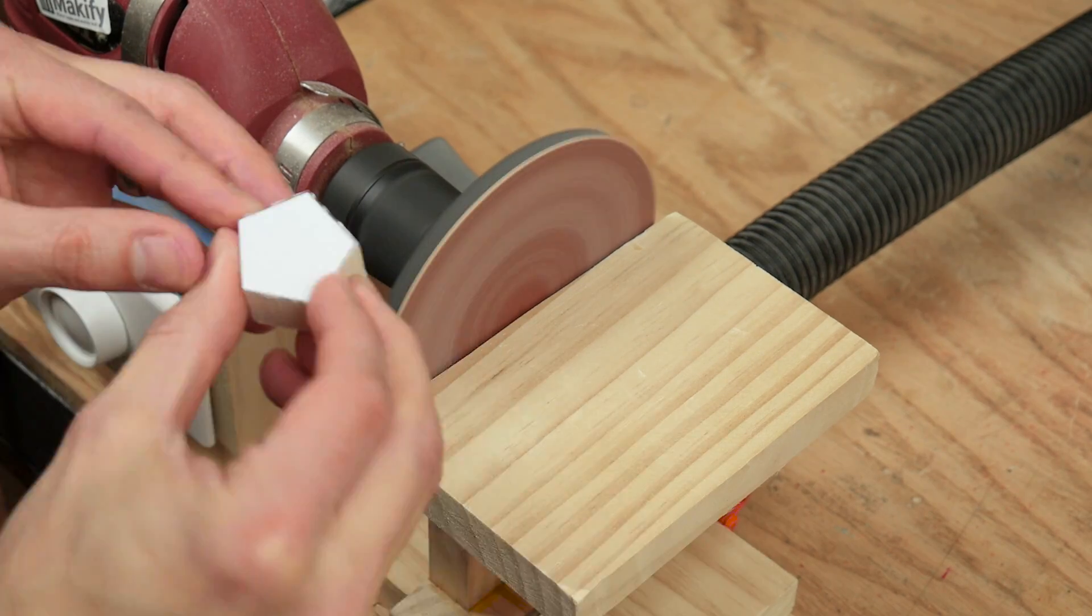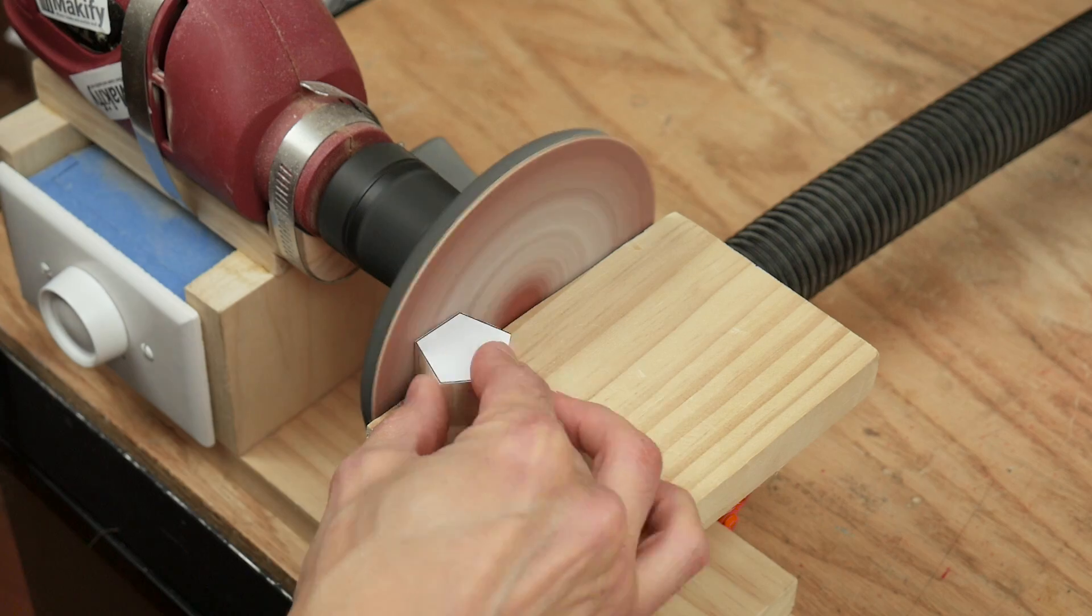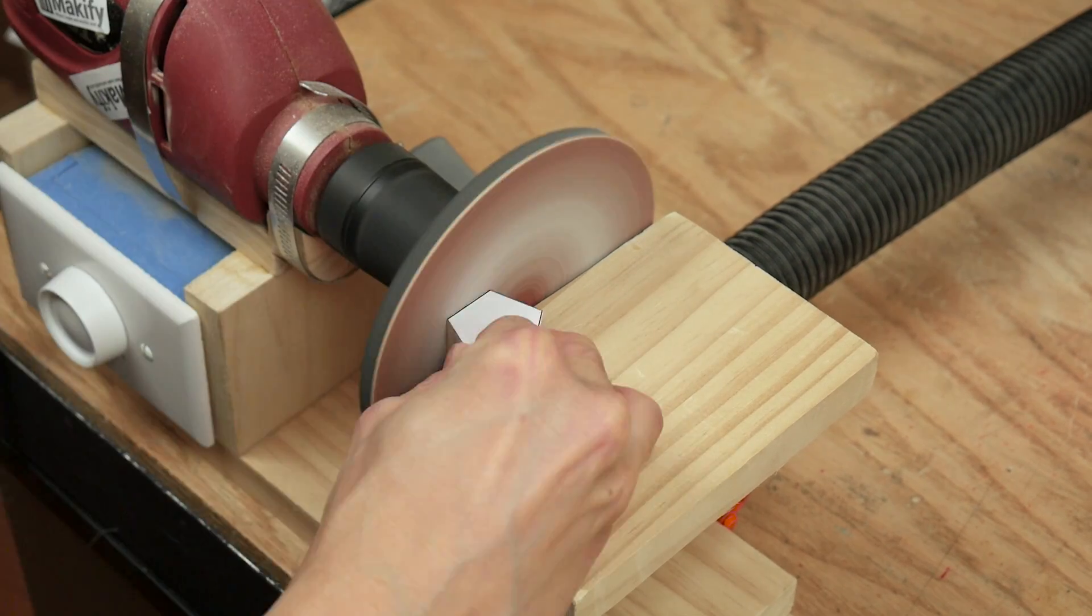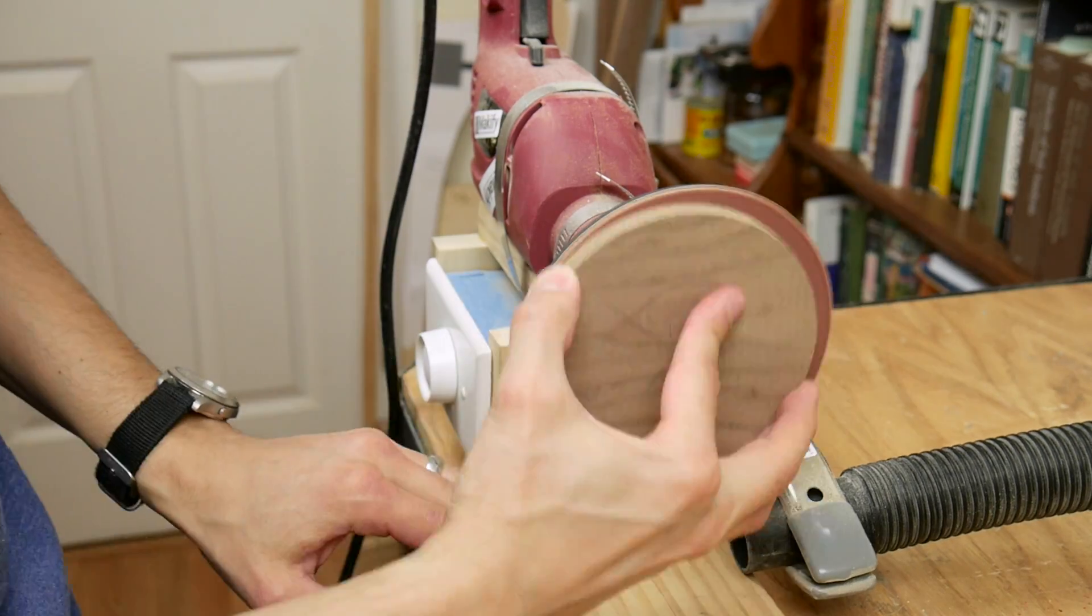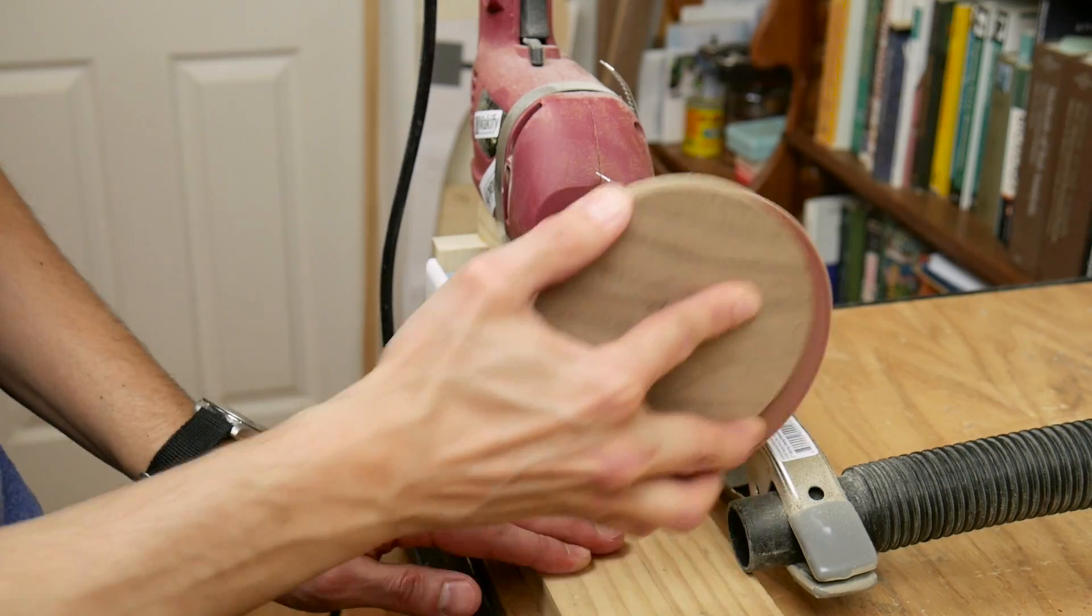Then I sanded the pentagons with my homemade drill powered lathe with a sanding disc attached. And I also sanded the faces of the circle pieces to get them nice and smooth.